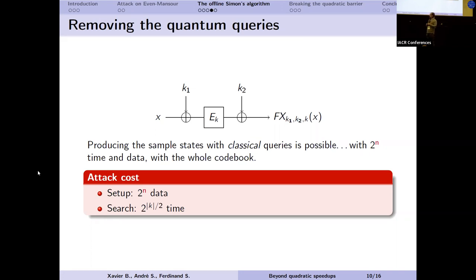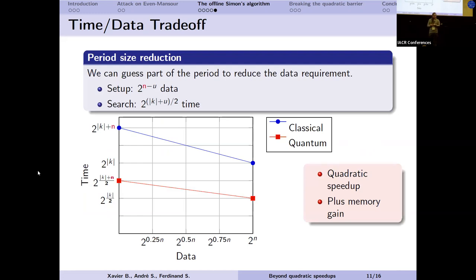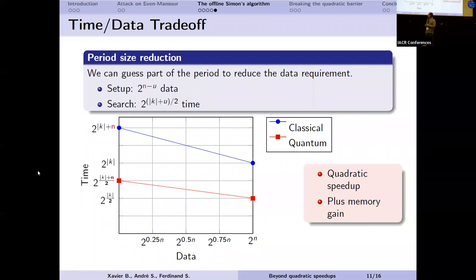With the full codebook, the attack cost becomes 2^n for processing classical queries, plus 2^(k/2) for the quantum search, up to polynomial factors. We can also trade off data against search cost by guessing part of the period: the setup cost becomes 2^(n-u) and the search cost increases to 2^((k+u)/2). The resulting time-data trade-off shows a quadratic speedup for any fixed amount of data compared to classical attacks, while quantum attacks always use polynomial memory versus sometimes super-polynomial memory classically.